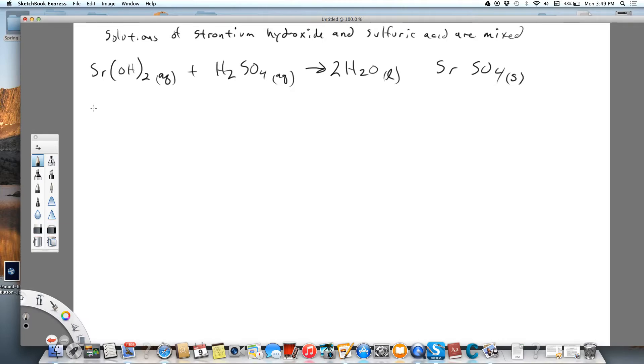Let's write the total ionic equation. This we know because it's aqueous, it's going to be a strong base, strontium two plus and two hydroxides. We know we have a strong acid here. Everything's ions on the left side because we have a strong acid and a strong base. Water does not come apart because it's a molecule, and then the strontium sulfate also stays as strontium sulfate because it's a precipitate.